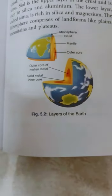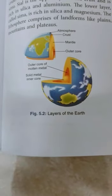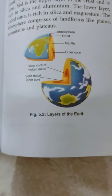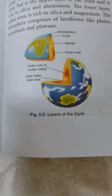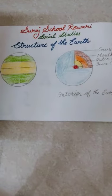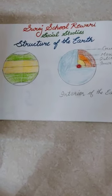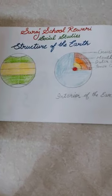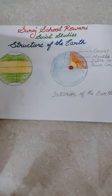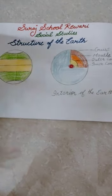We will study volcanoes, floods, droughts, cyclones, and earthquakes in this lesson. You already know that the earth is the only planet where life exists. The presence of land, water, and air makes it possible for all living things to exist on the earth. Together, these three constituents compose the three realms or domains called lithosphere, hydrosphere, and atmosphere.